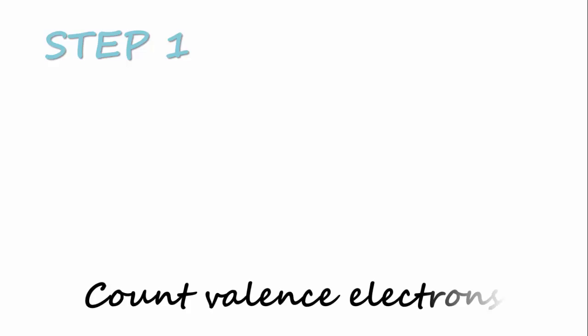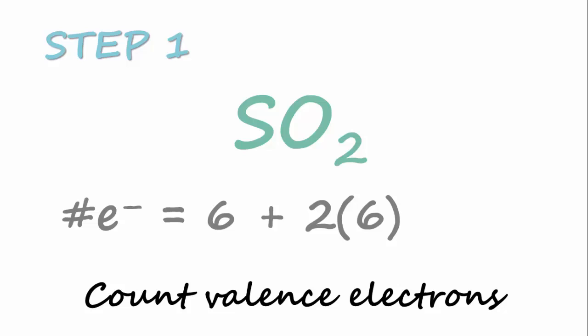We're going to work with sulfur dioxide in this video. Step 1, we'll need to calculate the total number of electrons we are going to work with by adding up all the valence electrons for all atoms in the molecule. Sulfur has six valence electrons and oxygen has six valence electrons. But since there are two of the oxygen, we'll need to multiply it by two. And this gives us 18 electrons to work with.